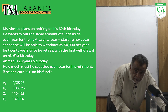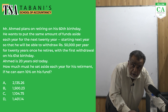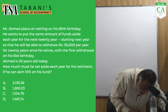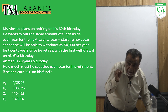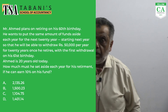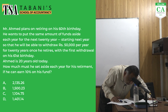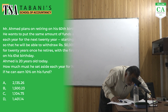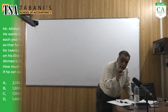Once he retires, he wants to get 50,000 per year for 20 years. He will have 20 years of withdrawals. Mr. Ahmed wants 50,000 per year after retirement.